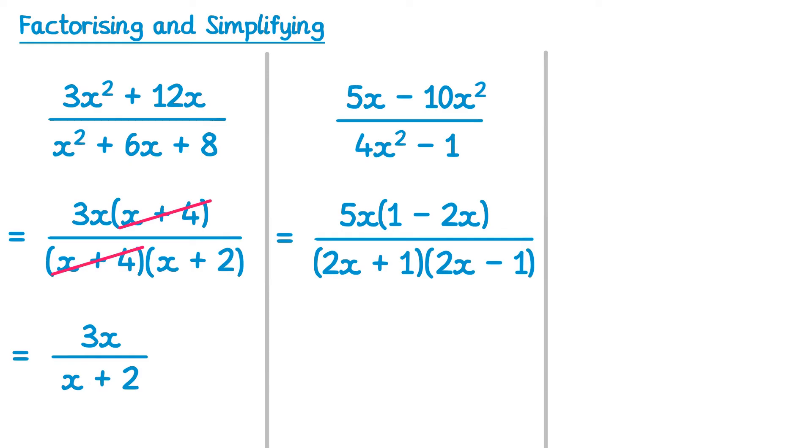At first glance it doesn't look like we have any common factors to cancel out, although the second bracket here looks very close to the bracket on the top, they're just the other way around. What we can do is refactorise the top, rather than taking 5x out, take -5x out. If you take out -5x, this will switch the terms around inside the bracket, so you'd end up with -5x(2x - 1).